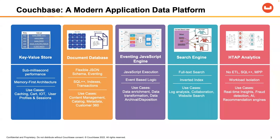The next node type is our Eventing JavaScript engine — the purple box in the center of the screen. In some sense this is very similar to traditional relational database triggers. You have ON UPDATE, ON DELETE, ON INSERT, and after these events you want to process or execute some type of business logic against that record.